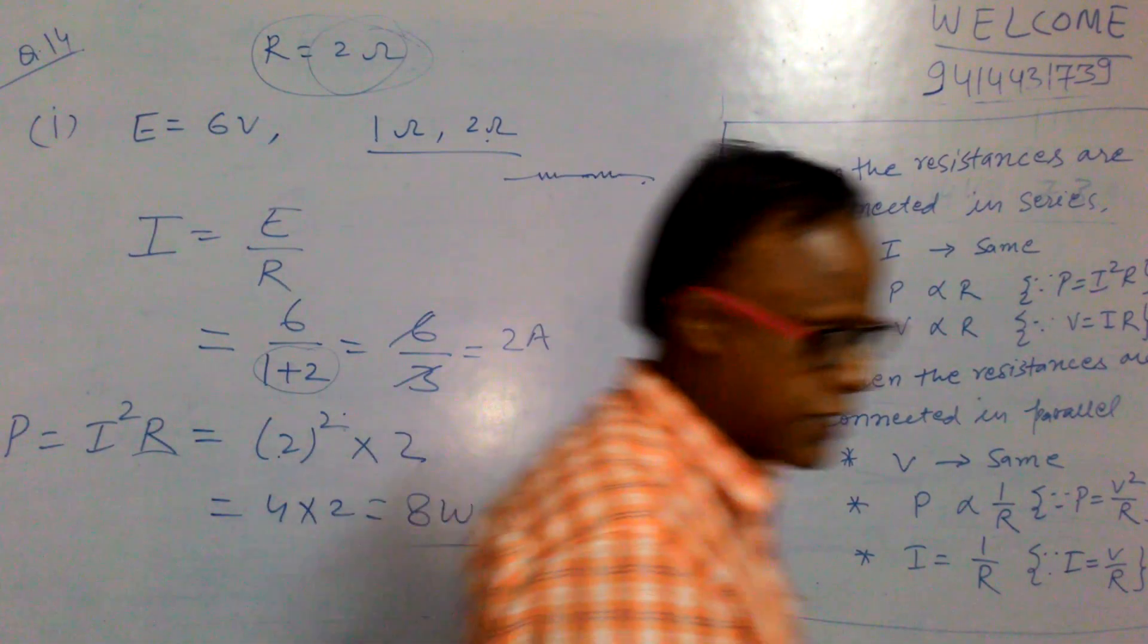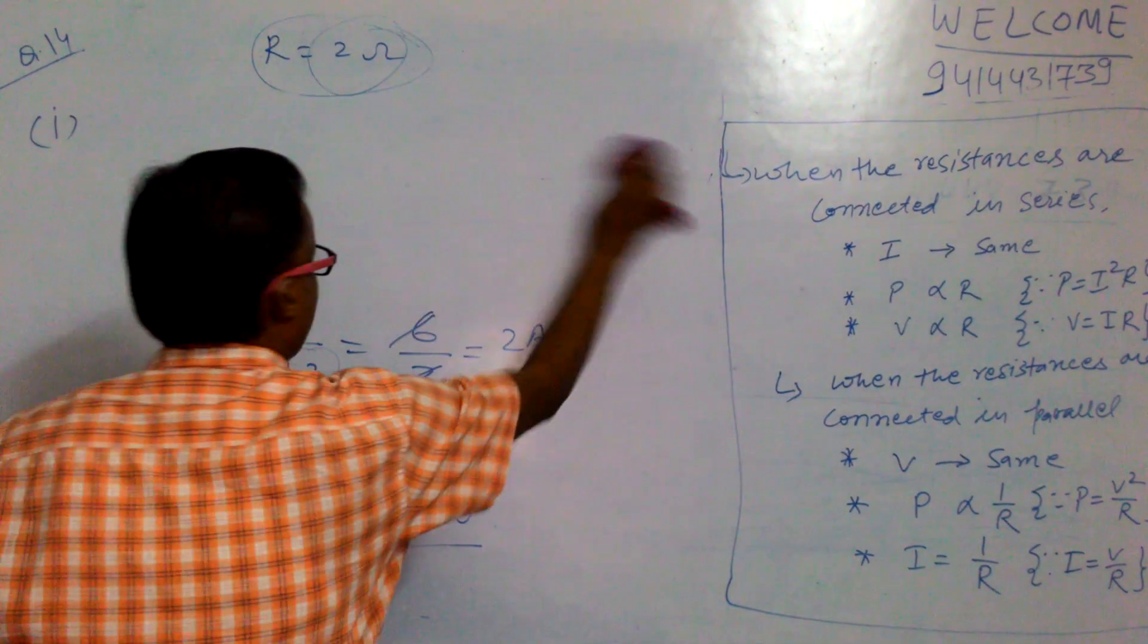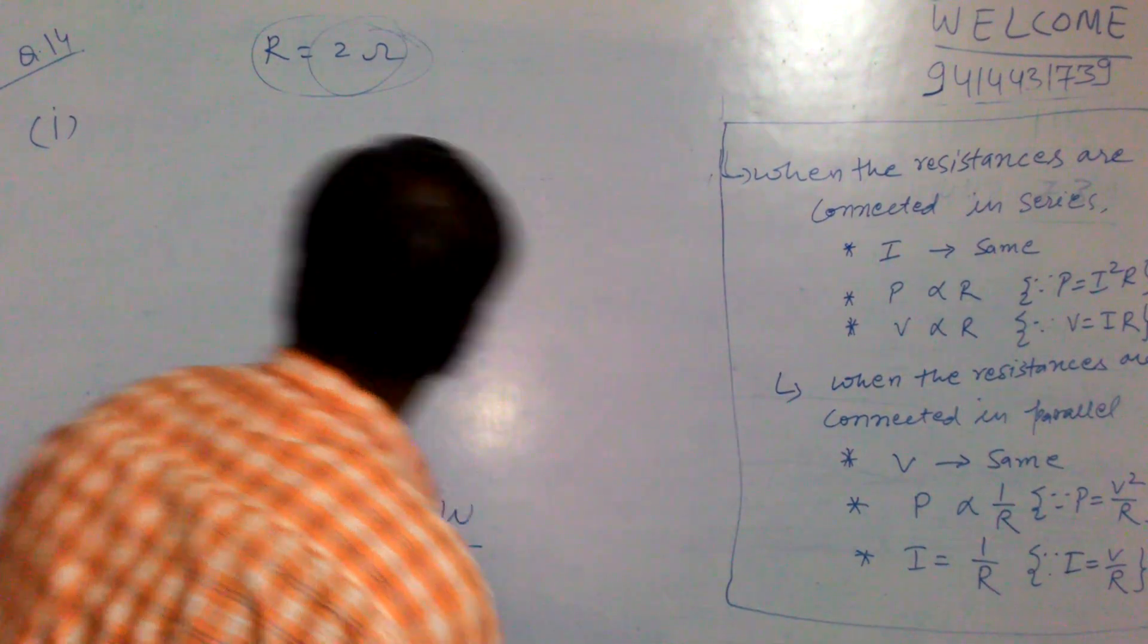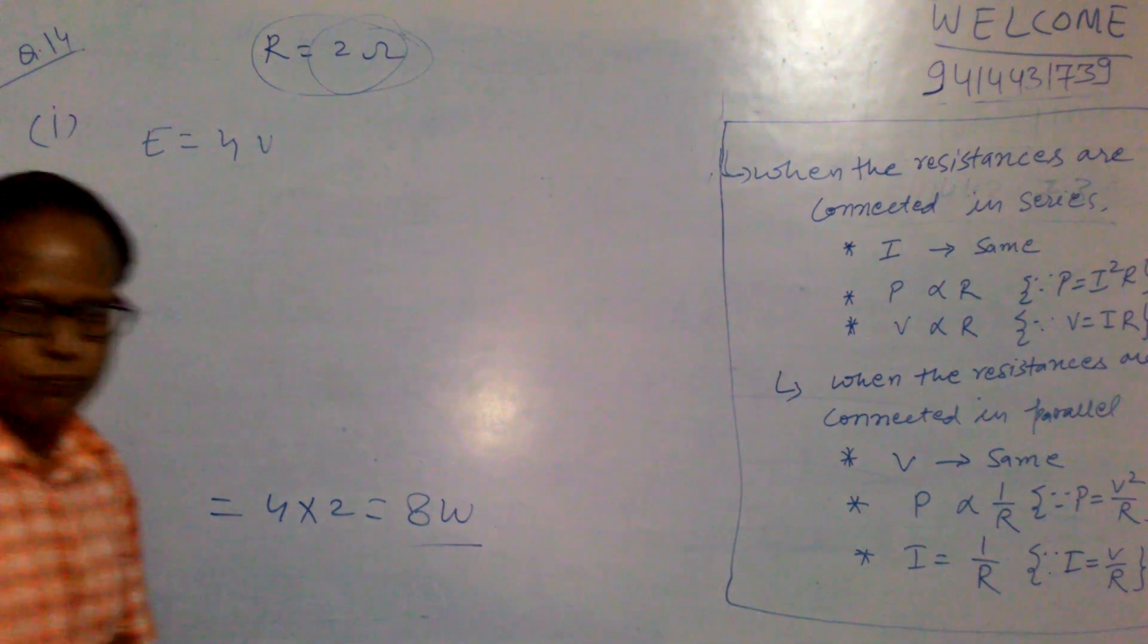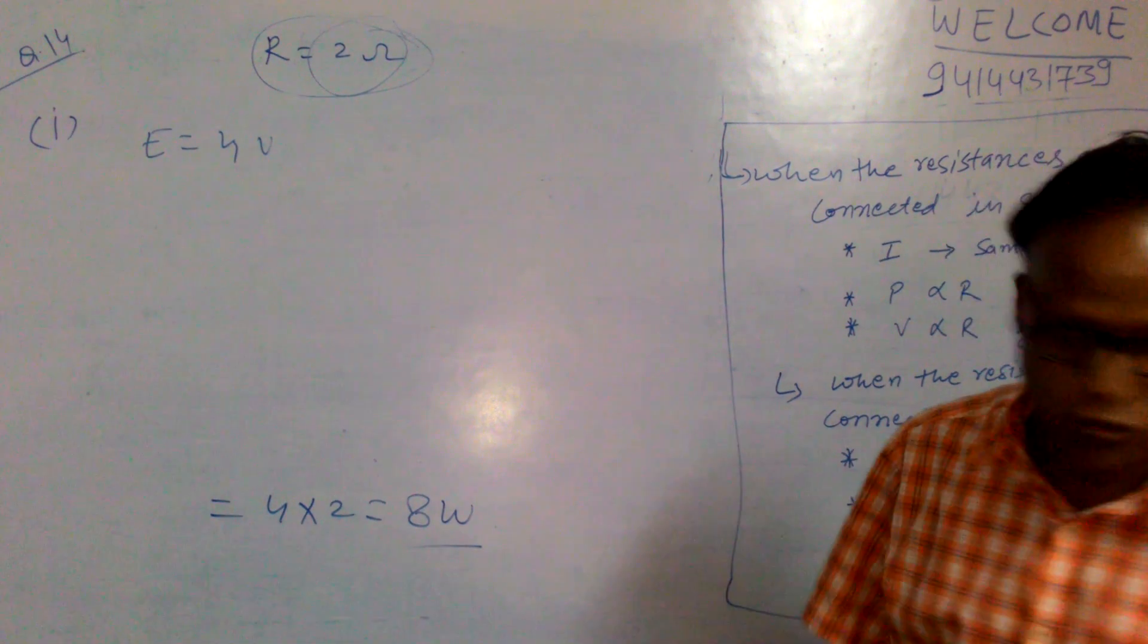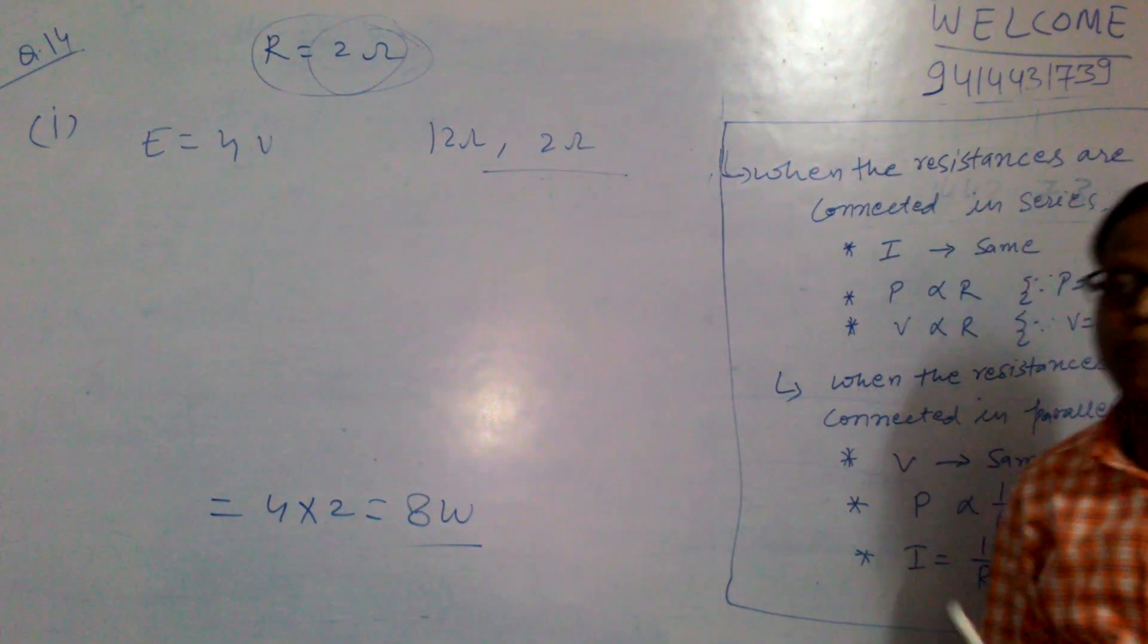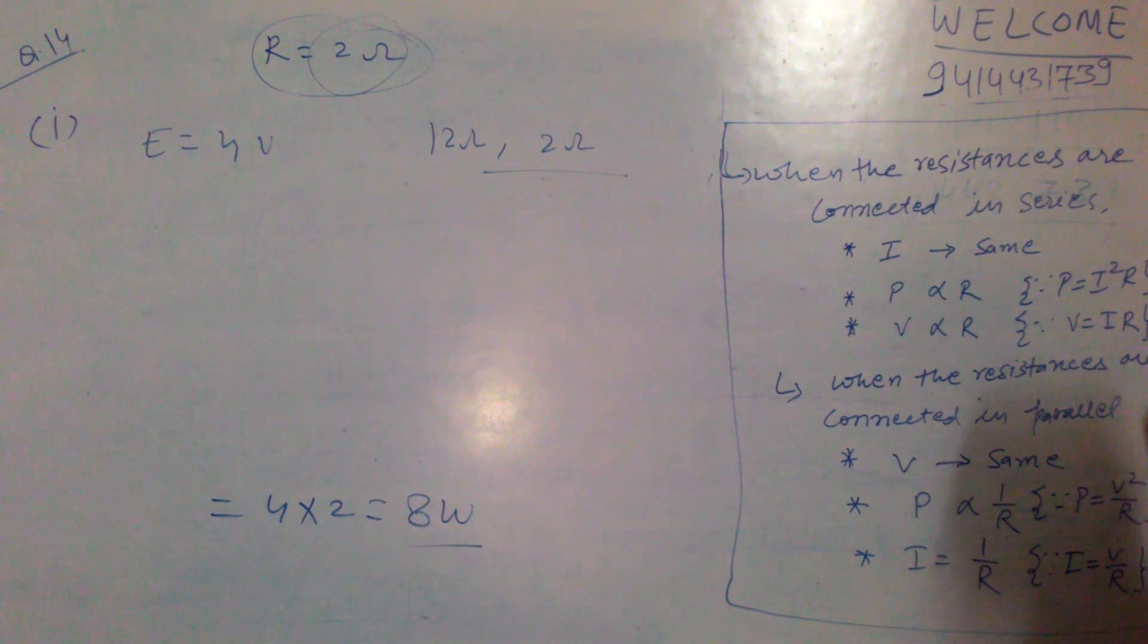Now read the second part. A 4 volt battery in parallel with 12 ohm resistor and 2 ohm resistor. Now battery is 4 volt. So 4 volt battery, which means now EMF is given 4 volt. In parallel with 12 ohm and 2 ohm resistor. When the resistors are connected in parallel,